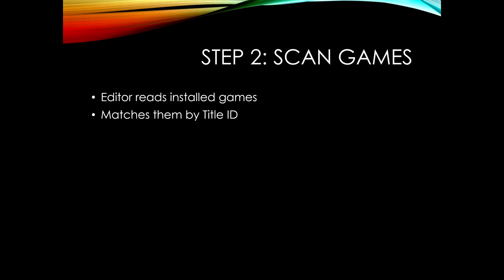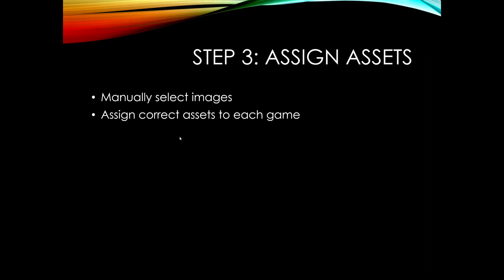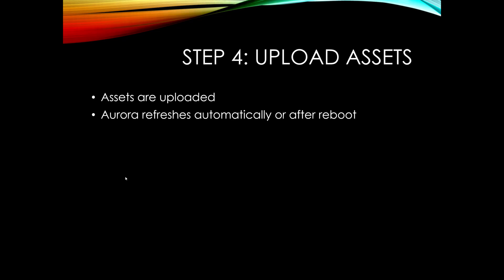Once you put that information in, the editor will scan your games using their title ID. You can select a particular game, right-click, and get all assets. If that game has no assets it will load blank pages, and from there you can manually search for that game either by title ID or by name. You'll be provided a list of different images to select from. Once selected, you can set the screenshots, banner, thumbnail, and cover art.